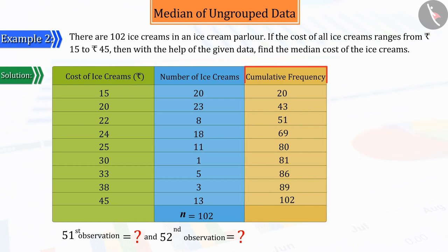From the above table, we can see that the 51st observation is 22 and the 52nd observation is 24, because out of the 102 ice creams, the price of ice creams from 52 to 69 is 24 rupees.